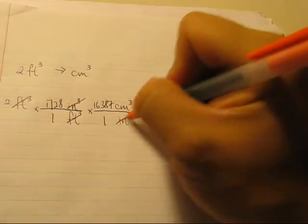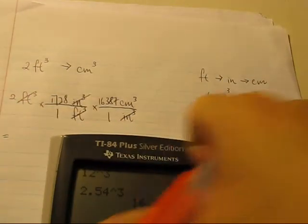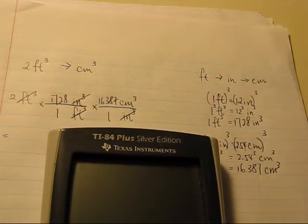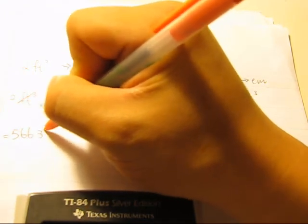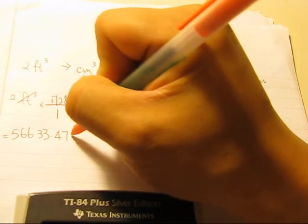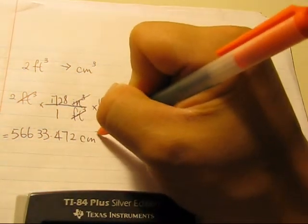Okay, and now if you just carry out the calculations, you would have two times seventeen twenty-eight times sixteen point three eight seven. And you get five six six three three point seven four seven two cubic centimeters.